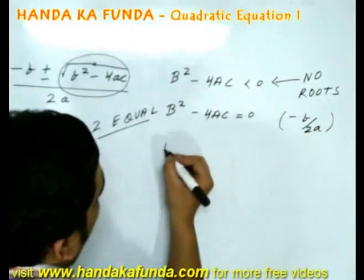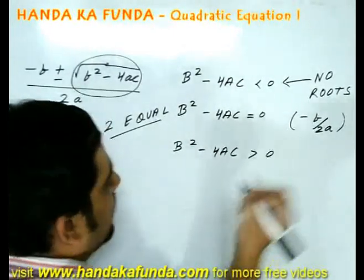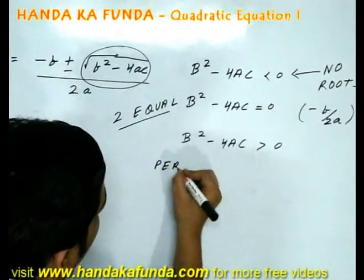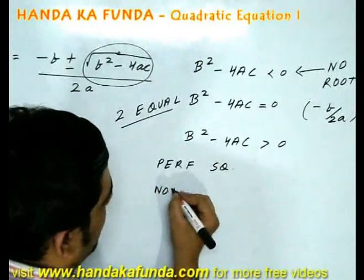But what if my b square minus 4ac is greater than 0? Then there will be two sub cases. One, if it is a perfect square. And second, if it is not a perfect square.